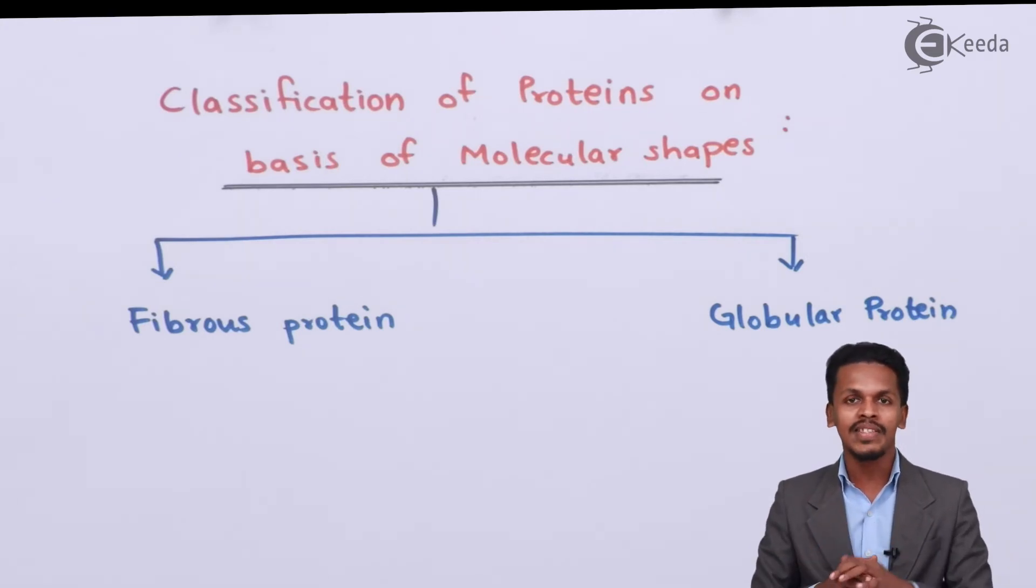Globular proteins are very soluble in water and have less strength compared to fibrous proteins. For example, hemoglobin is a type of globular protein.